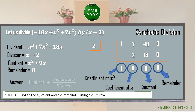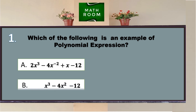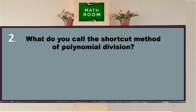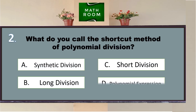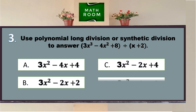Since the remainder is 0, we use the formula quotient plus remainder over divisor, wherein the quotient is x squared plus 9x and there is no remainder. Therefore, our answer is simply the quotient itself: x squared plus 9x.